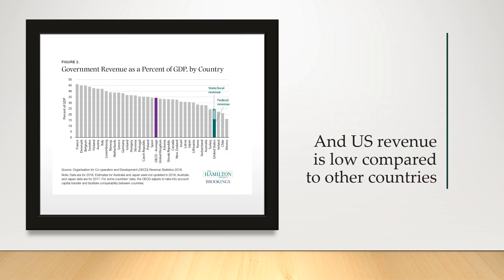U.S. revenue is also relatively low compared to other countries. The purple line shows the average of all OECD countries, and the United States sits far to the right — meaning we take in a very small percent of our income from taxes relative to others. This isn't an absolute amount; obviously the U.S. federal government takes in more than many smaller economies. But as a percentage of GDP, the U.S. takes in much less through taxes. The federal government takes in quite a lot less, with some gap made up by state and local revenue — but even combined, the U.S. still collects a very small share.